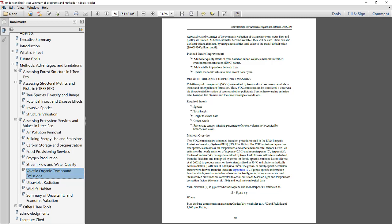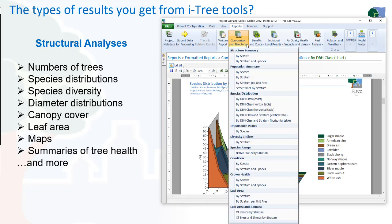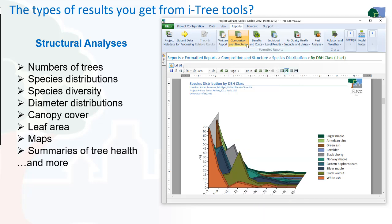So what type of results can you get from iTree? This is an example from iTree Eco. You can get number of trees, species distribution, and diversity information. It shows distribution by DBH class, which is a helpful way of looking at the tree resource to understand age structure across a forest. There are many different reports available in this tool — it is one of the most sophisticated tools available within the iTree suite.